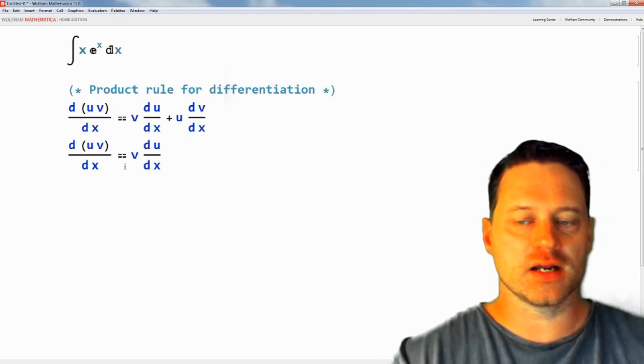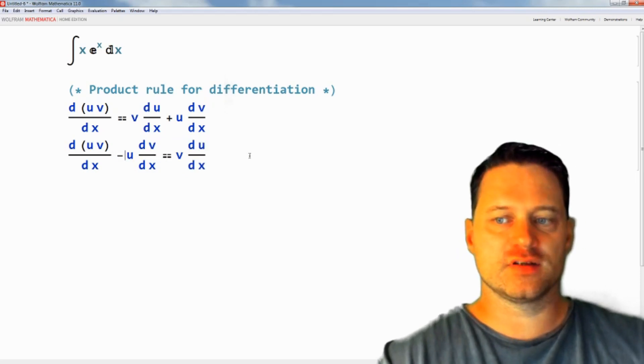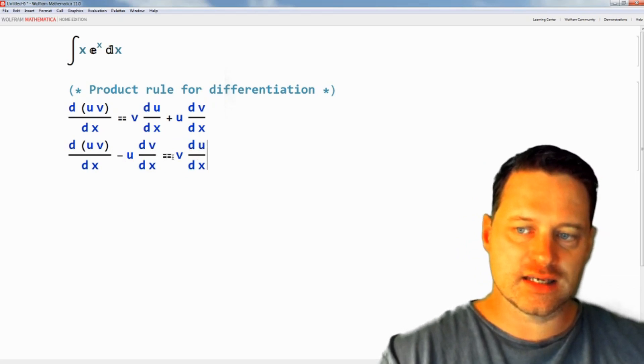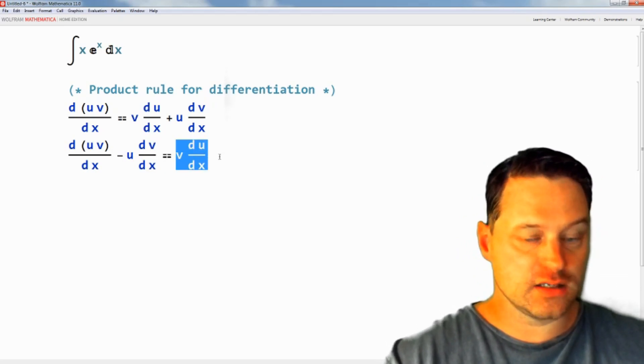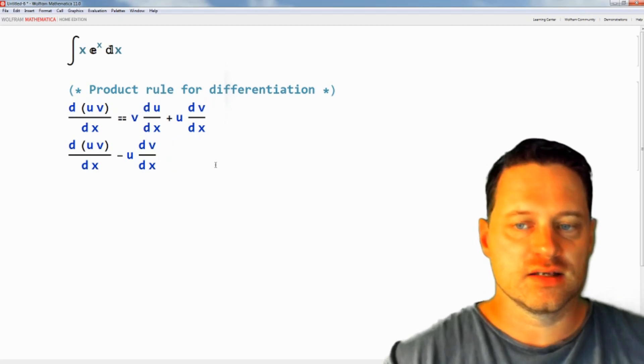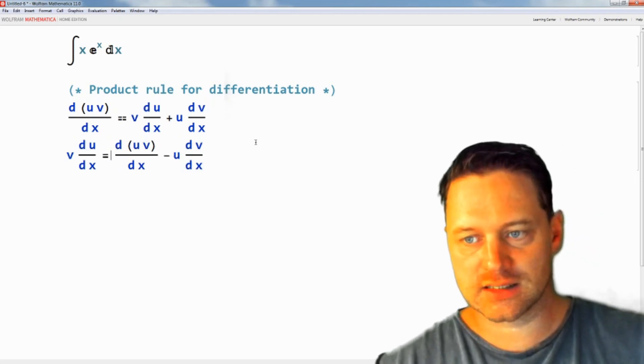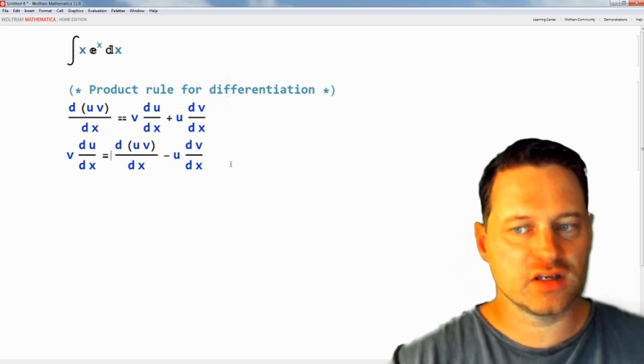So it vanishes on the right hand side and we subtract it on the left. This here says that v du/dx is equal to the derivative of the product of u and v with respect to x minus u dv/dx.